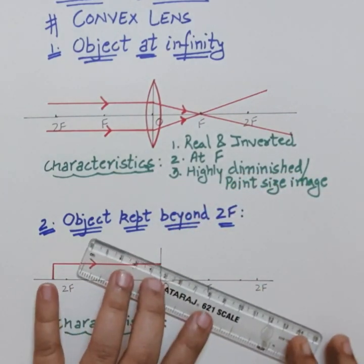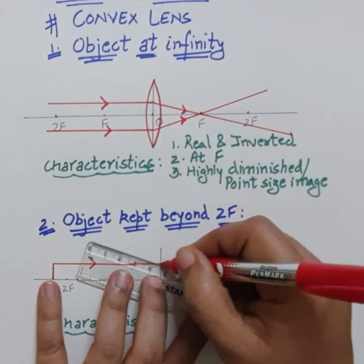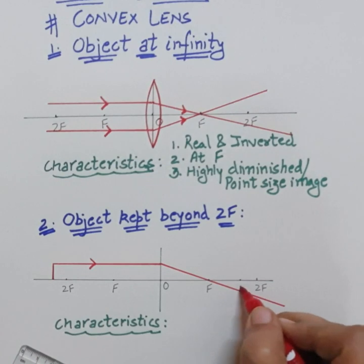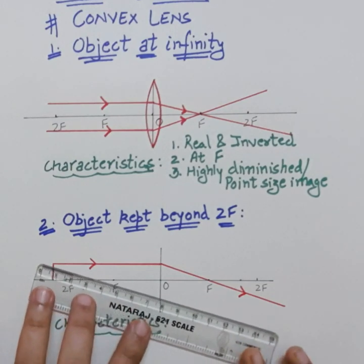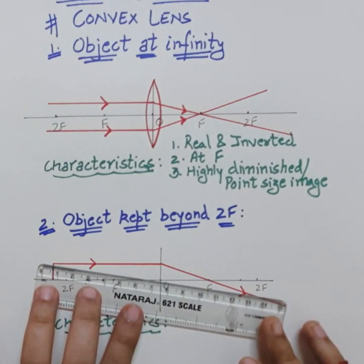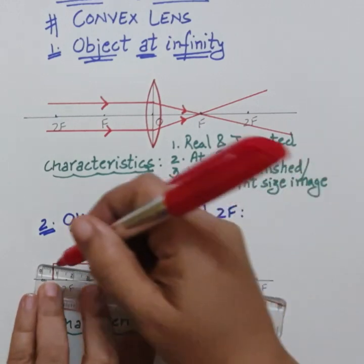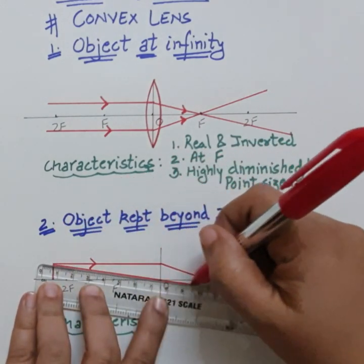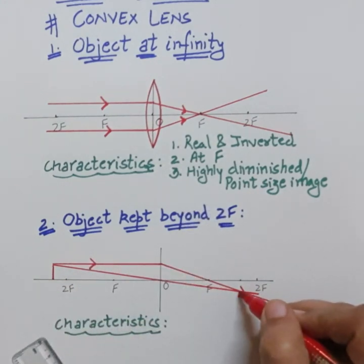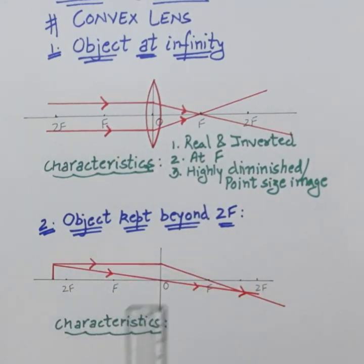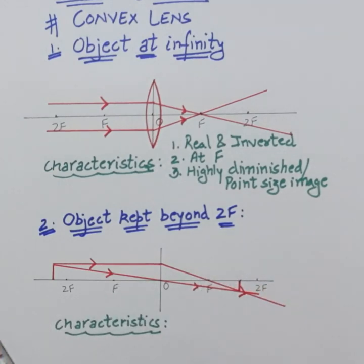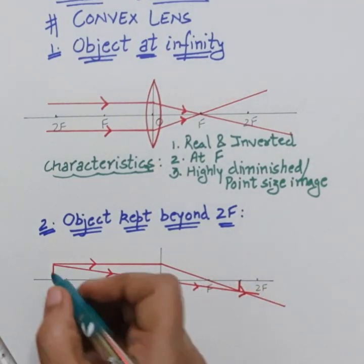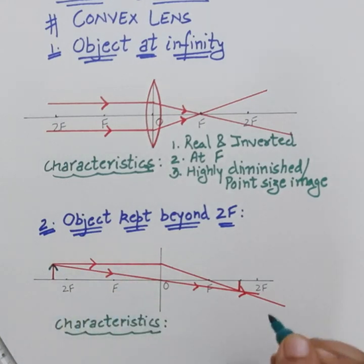Following rule number one, draw a ray parallel to the principal axis — the arrow will pass through the focus. Two rays are required to draw the image. For the second ray, we use rule number three: when a ray passes through the optical center it goes straight without any deviation. The rays are meeting — don't forget to put the arrows. Draw the image.